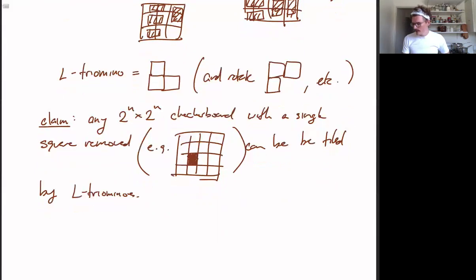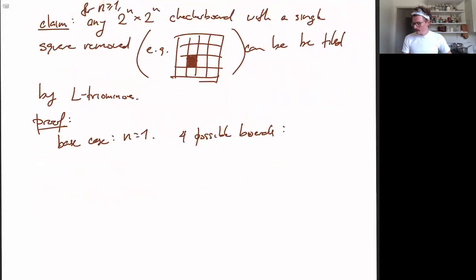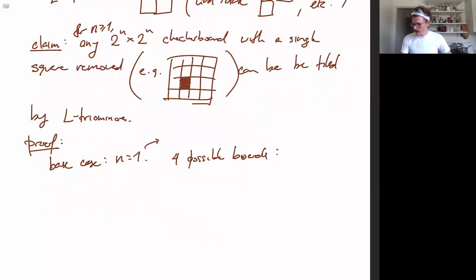So let's prove this. And as you can probably suspect, we are going to prove it by induction. So our base case is n equals 1. And in this case, there are four possible boards based on which square we are deleting. So n equals 1 means 2 by 2.